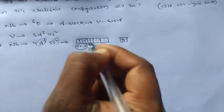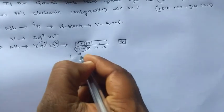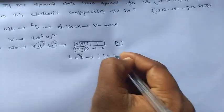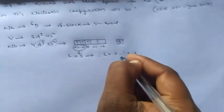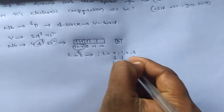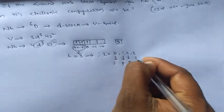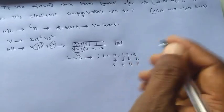So we have L is equal to 3 here. From this we know that L is equal to 0, 1, 2, 3. If L is equal to 0, that is S. L is equal to 1, that is P. L is equal to 2, that is D. If L is equal to 3, that is F.